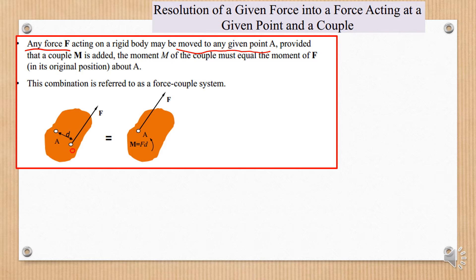For example, we want to move force F to point A. We can move it, but we should provide a couple M, where the value of the moment of the couple should be equal to the moment of F about point A. So we can move it to point A as long as we provide a moment with the value similar to the moment towards that point from its original point.